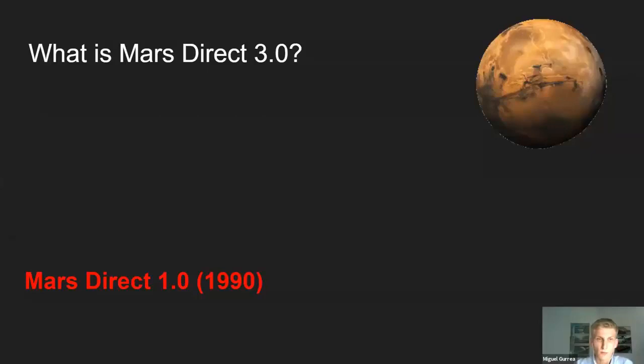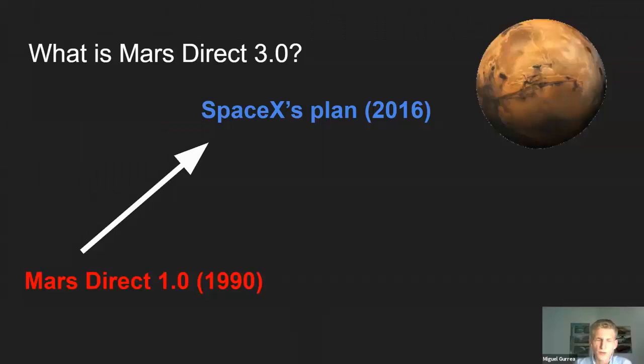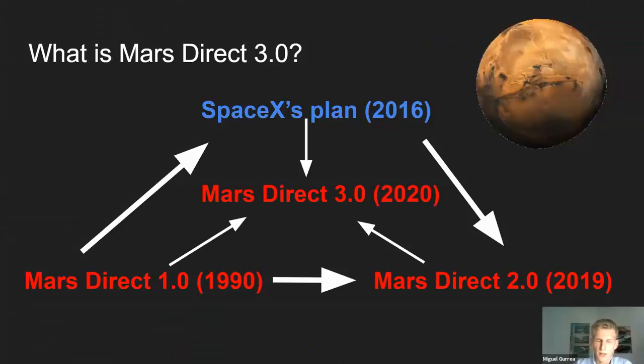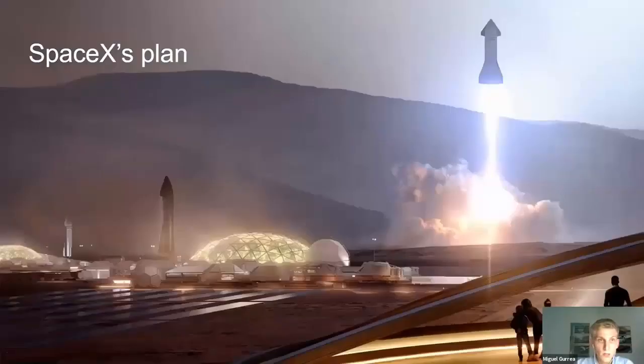This all started back in 1990 when Robert Zubrin presented Mars Direct 1.0. Unfortunately it didn't happen. Then in 2016, SpaceX presented their plan, which introduced the ship now known as Starship. It didn't focus too much on the details of what to do once on Mars, but gave a good overview of the ship they're planning to use. Then in 2019, Dr. Zubrin presented Mars Direct 2.0, which was mostly a revision of SpaceX's plan rather than his original plan. Mars Direct 3.0 gets ideas from all three plans and adds some original ideas.